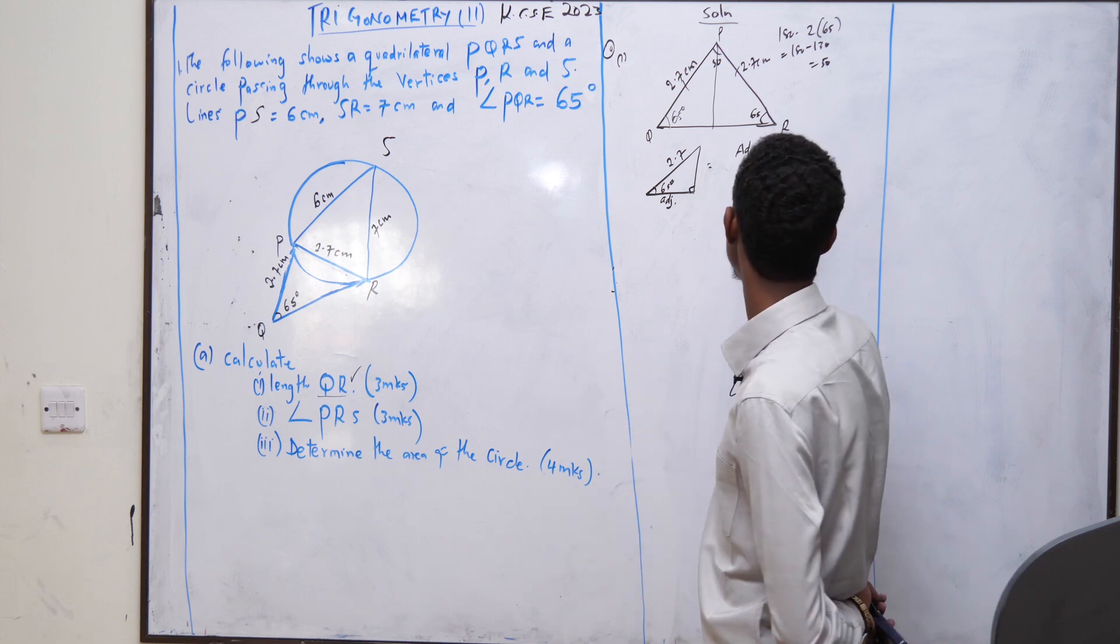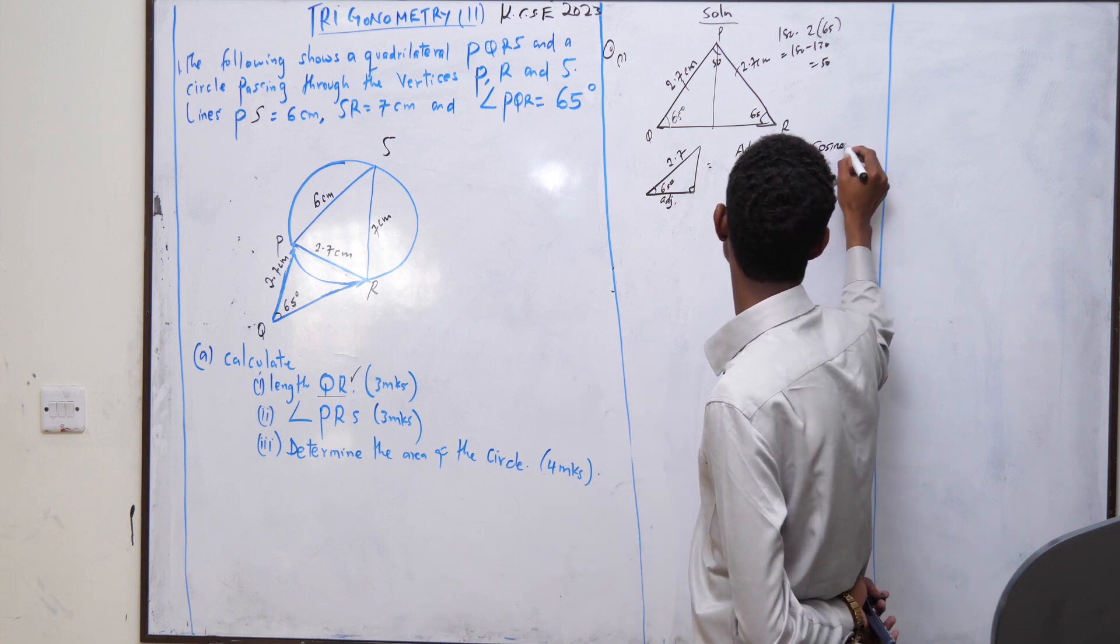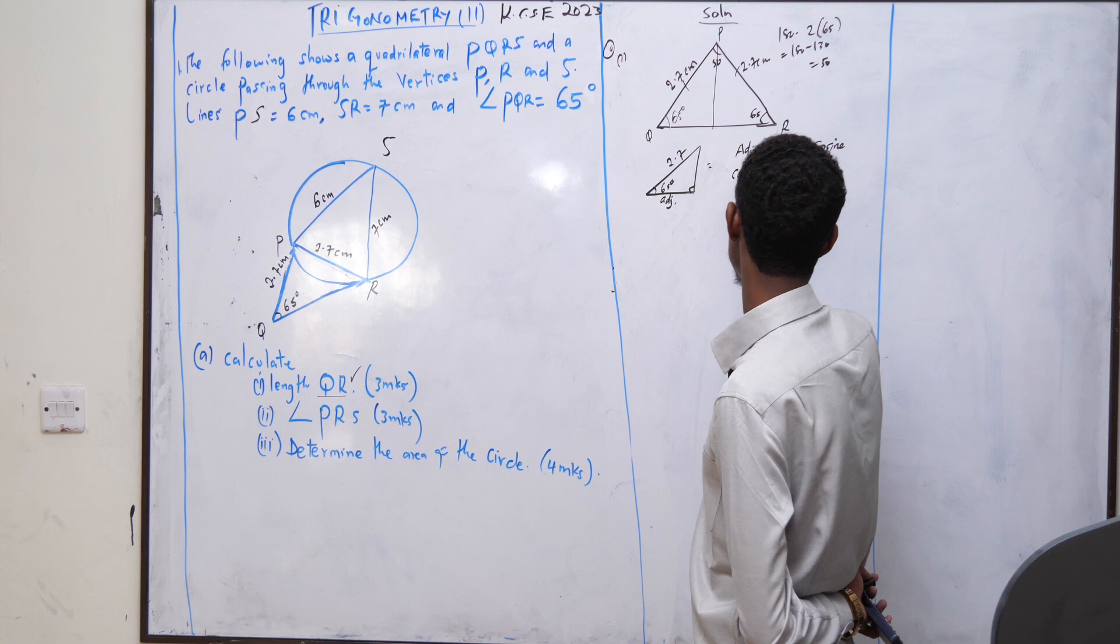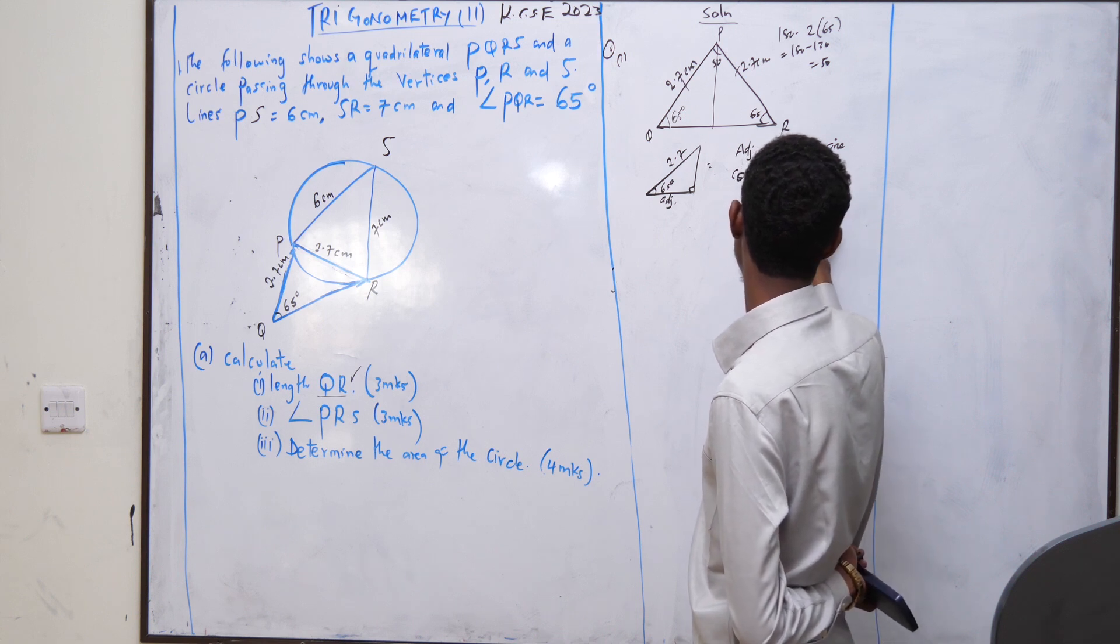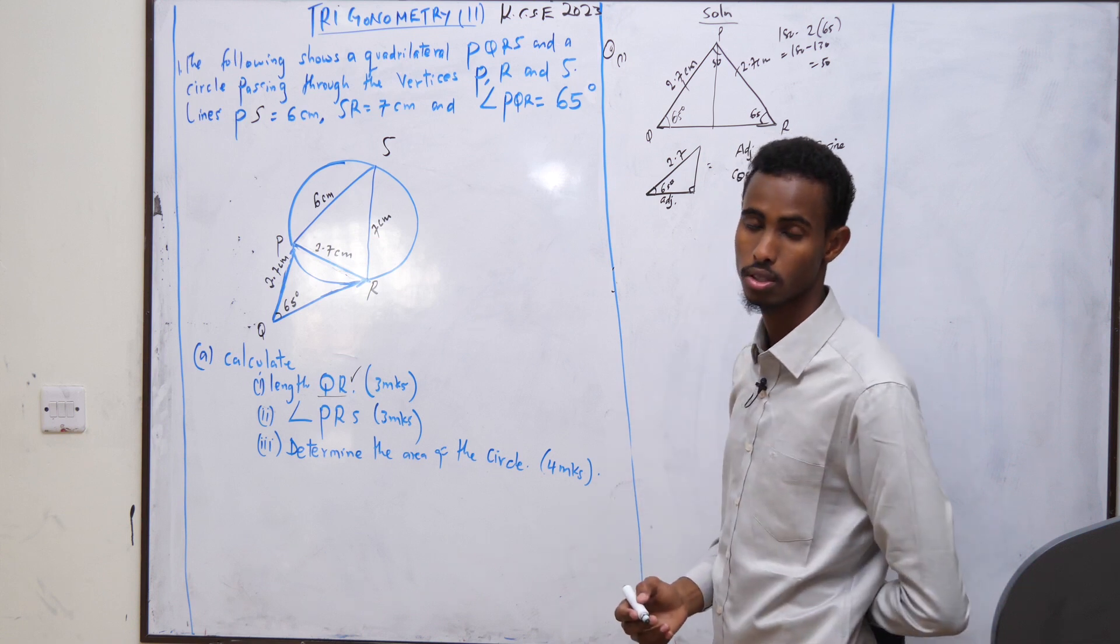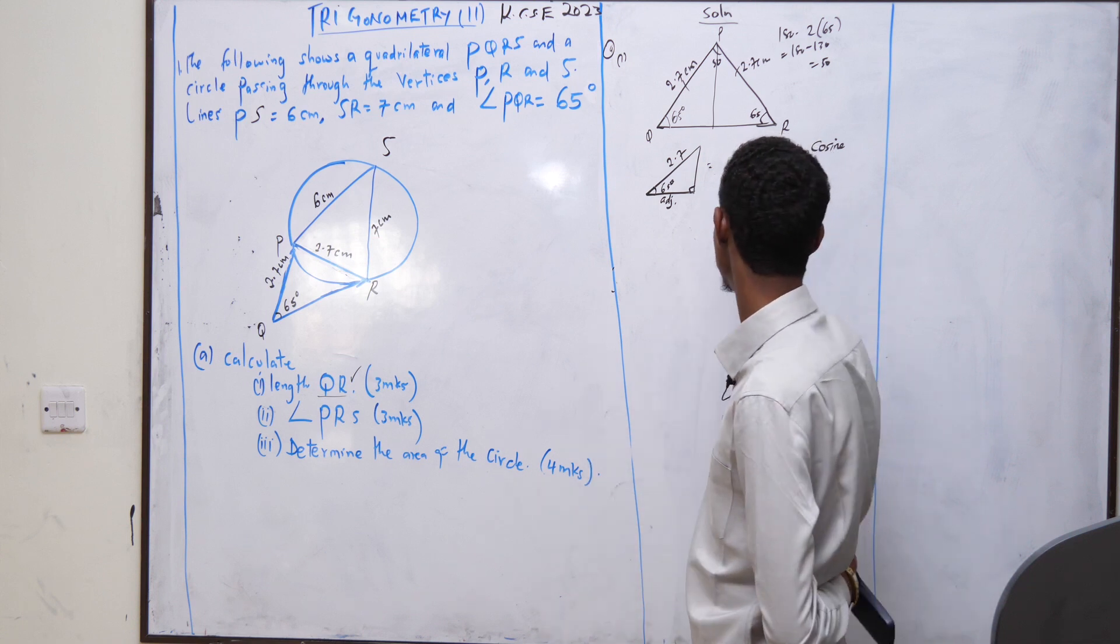Therefore, SOHCAHTOA, cosine. Because cosine says cos θ equals adjacent over hypotenuse.